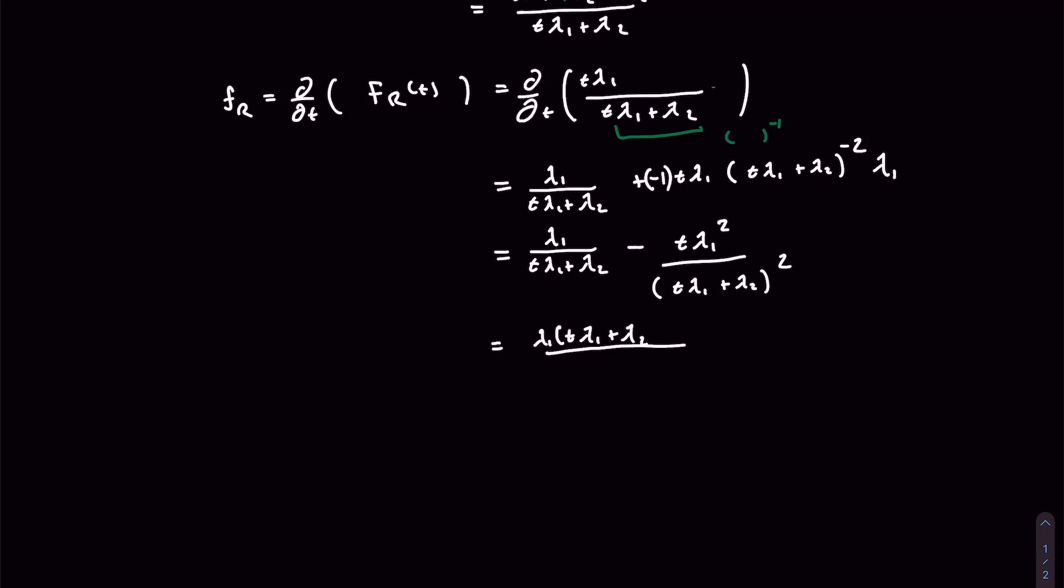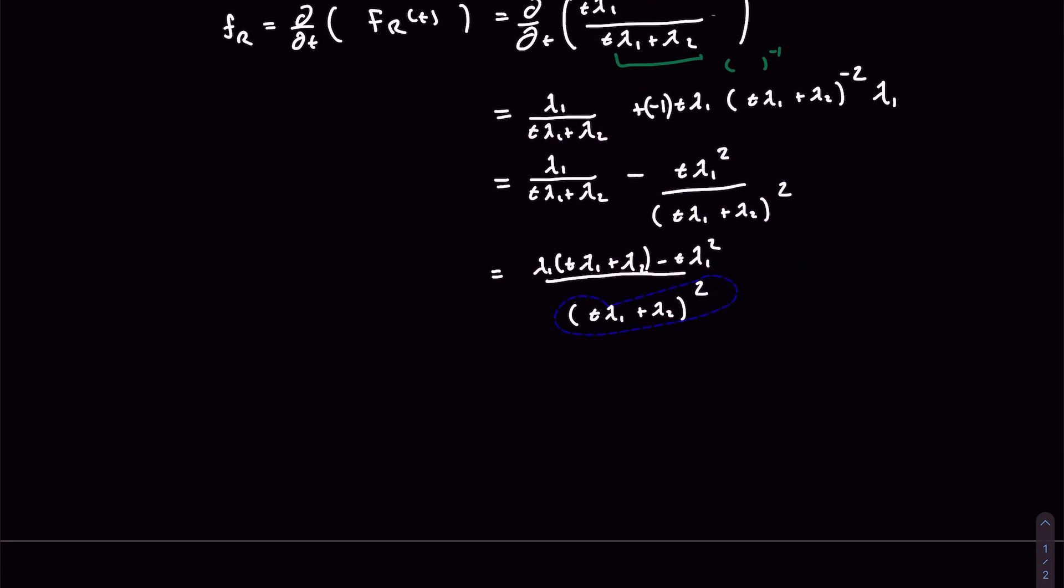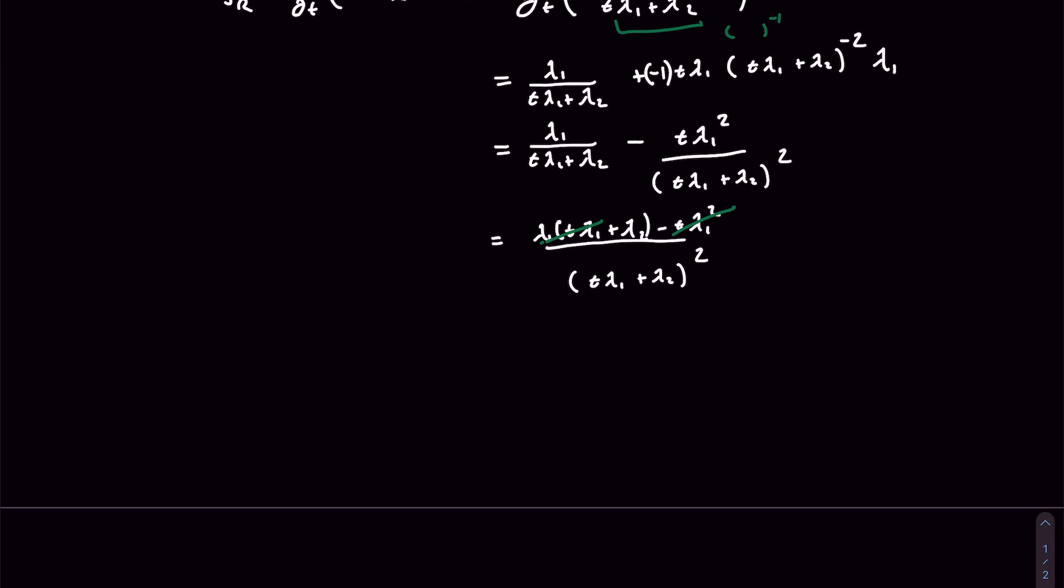so we do lambda 1 T lambda 1 plus lambda 2, and minus, and this would be lambda 1 squared, and this whole thing divided by this. Now we see that when we multiply in lambda 1, we get a square, which is exactly this term here, so this will cancel, and we will be left with lambda 2 divided by T lambda 1 plus lambda 2 squared, and this is indeed the pdf of what we were asked to calculate.